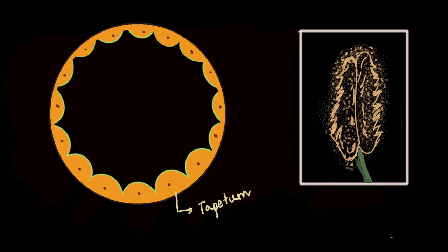Let's get rid of all these cells and just keep one. Here it is. This is also a haploid microspore. Now this microspore has a membrane which is just like a cell's membrane, similar to plasma membrane.